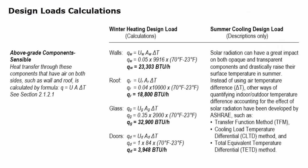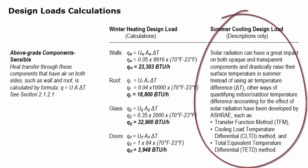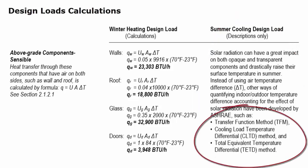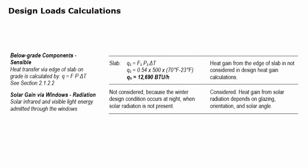The first step is to perform load calculations for above-grade components for sensible heat, using the Q = UAΔt formula, starting from walls, then roof, windows, and doors. For cooling design loads in summer, the way to quantify ΔT is different and more complex, and ASHRAE provides methods for that purpose. Next, we look at below-grade components. For heating design load, we use the F-factor formula: F × linear feet of slab edge × ΔT. The heat gain from the edge of the slab is not considered for cooling load design.